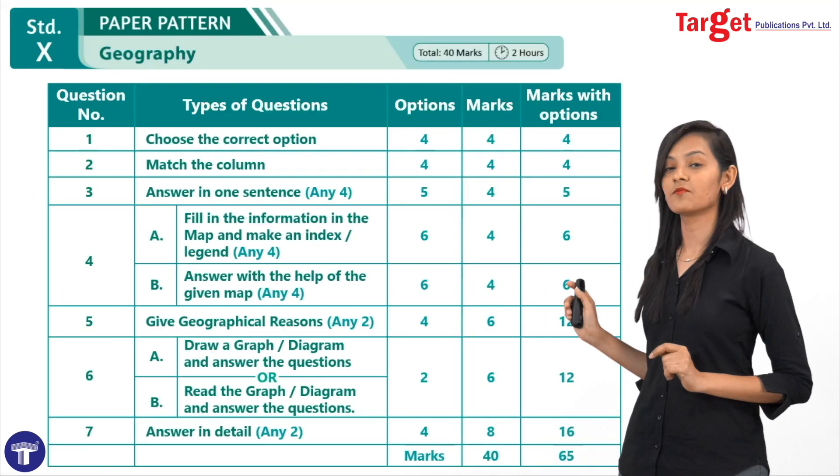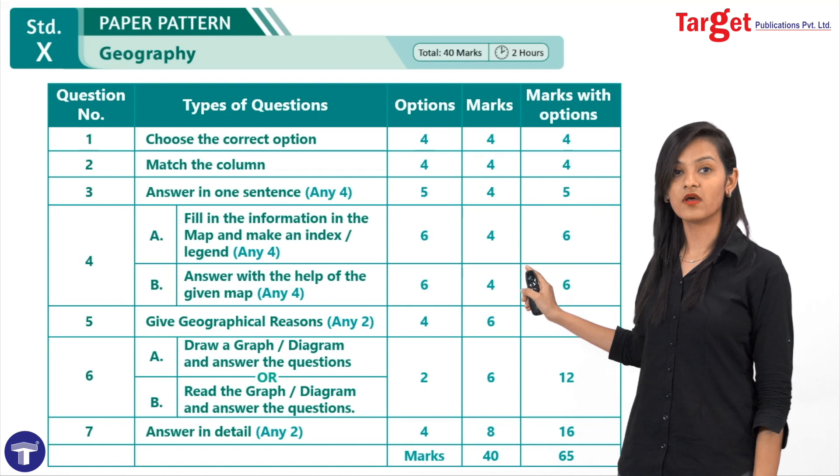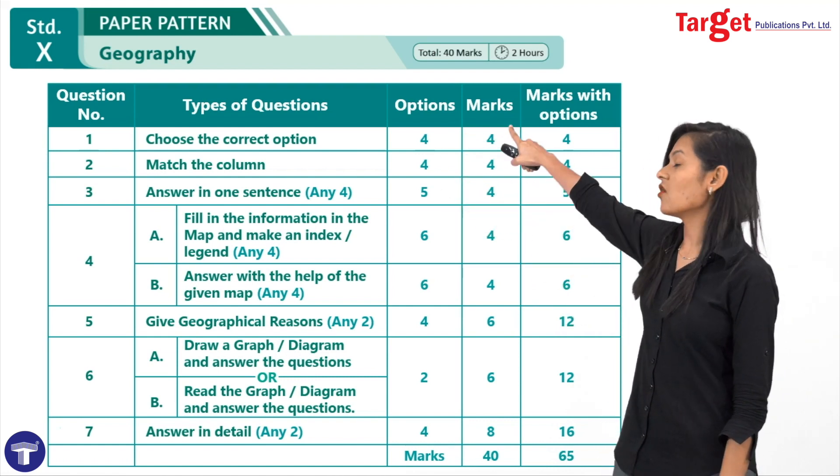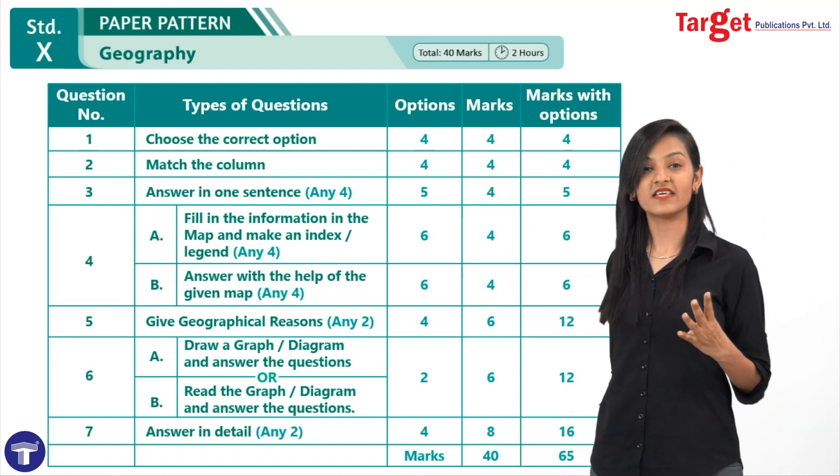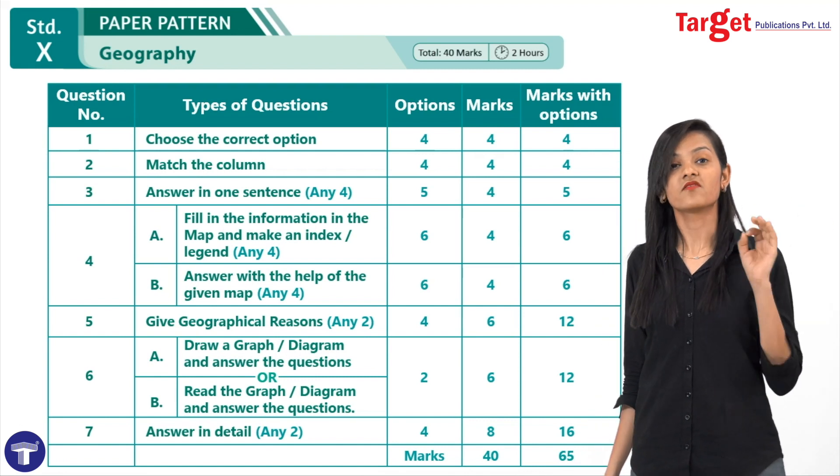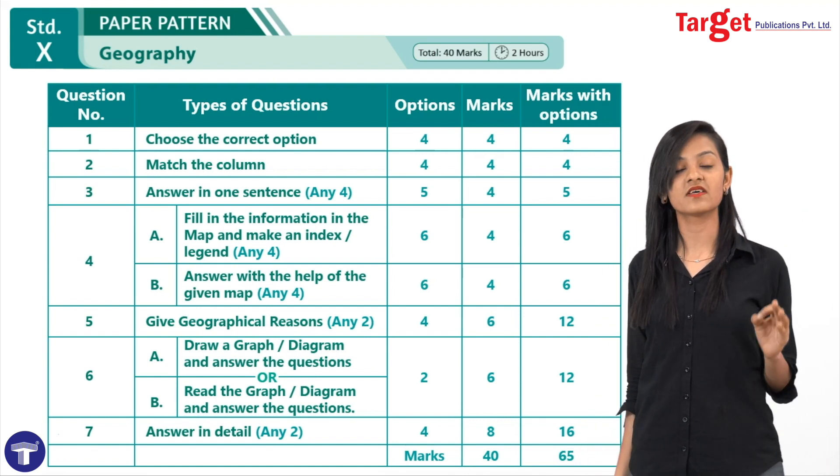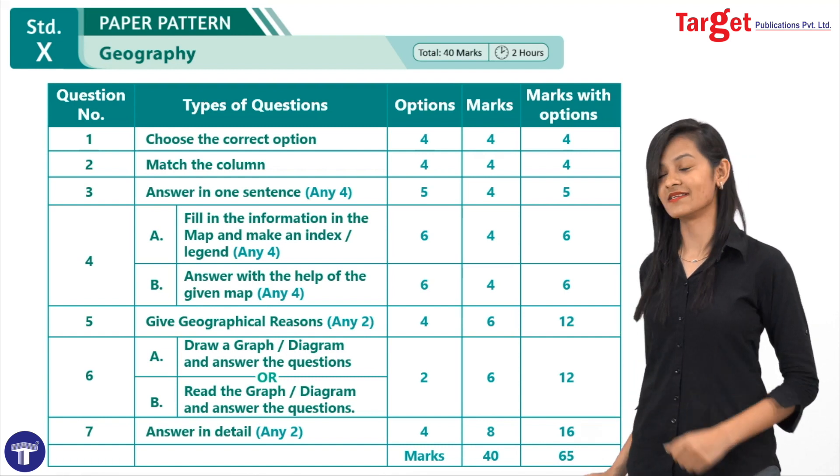Now students, one more thing. As you can see on the board, question number one, two and three, all are for four marks each, a total of twelve marks, which are purely for objectives. Again, very important from board perspective.